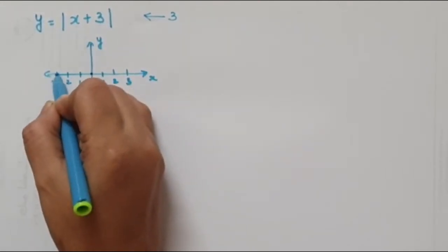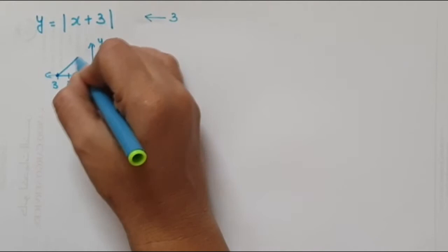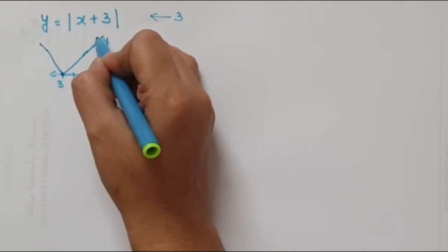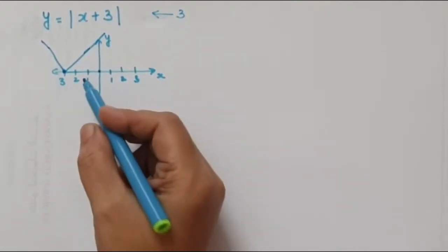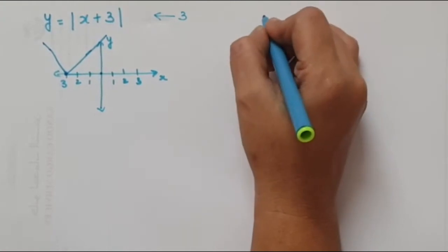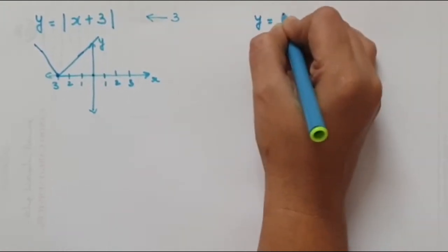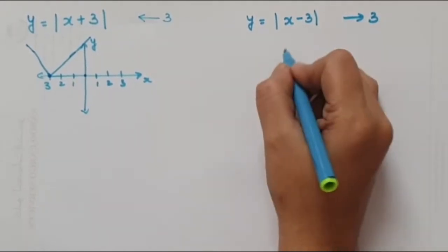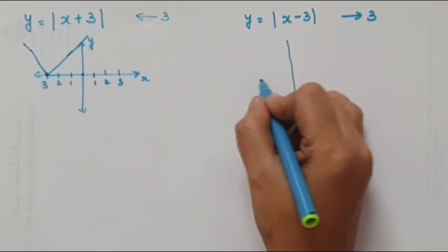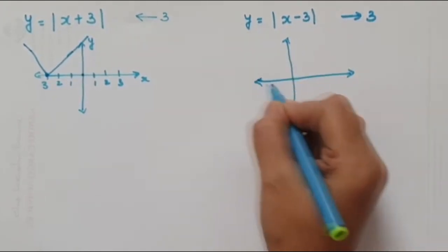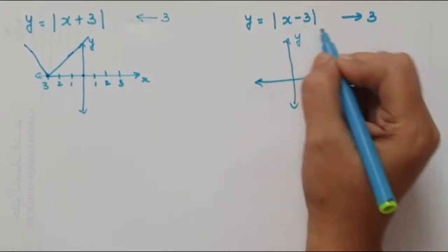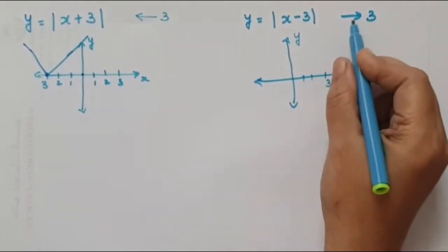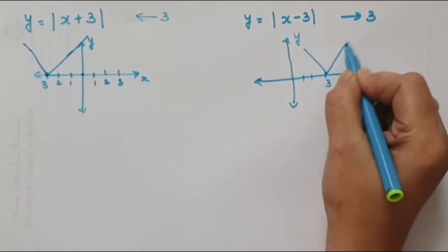So moving 3 units to the left, our graph will be in the shape of a V at x = -3. In the same way, if we have y = |x - 3|, this means the graph moves 3 units to the right. So our graph shifts 3 blocks to the right and we have our V-shaped graph there.